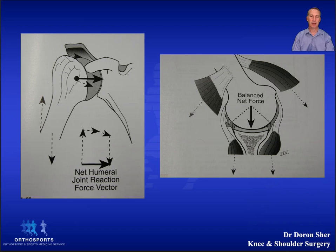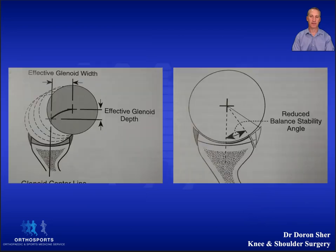The static stabilizers have the greatest contribution to shoulder stability at the end of range of motion. These are principally the ligaments, but negative intra-articular pressure certainly contributes. The principal dynamic stabilizers are the muscles of the rotator cuff.